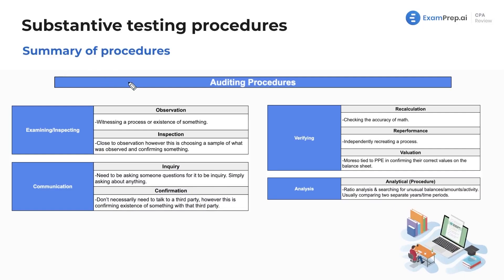Here's where we really start to have fun when we come to these accounting procedures — our assertions and what we're going to do: observation, inspection, inquiry, confirmation. Starting to sound familiar.